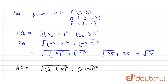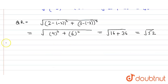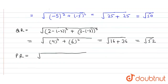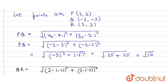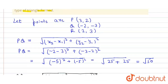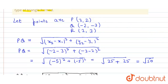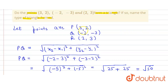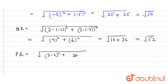Finally, the distance PR equals √((3 - 2)² + (2 - 3)²) = √(1 + 1) = √2.